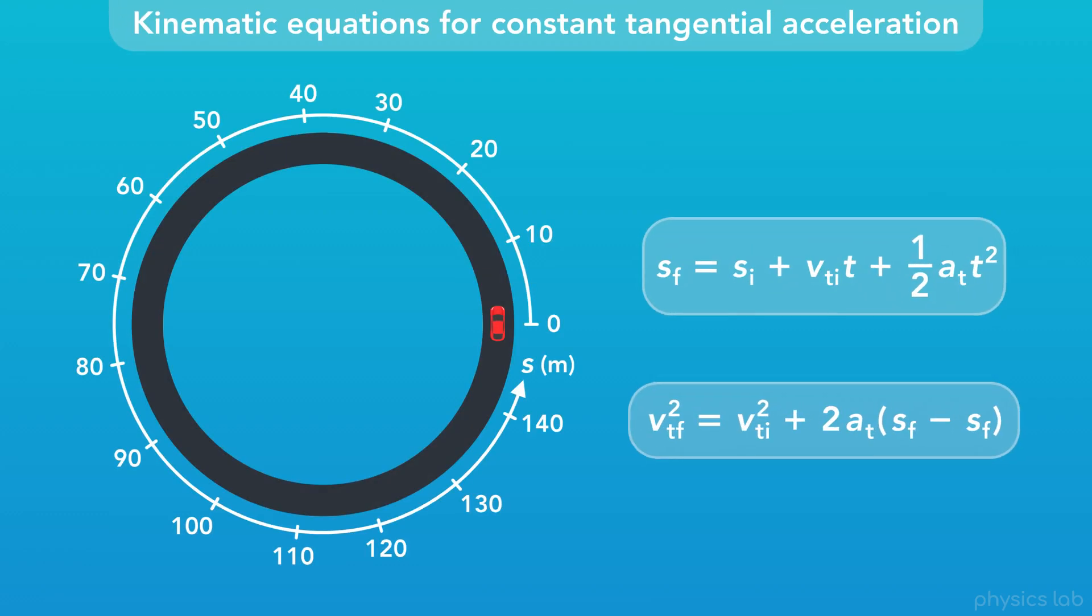Finally, let's look at the two other kinematic equations for an object with a constant acceleration. These should look familiar. The first equation tells us that for an object in circular motion with a constant acceleration, the final position is equal to the initial position plus the initial tangential velocity